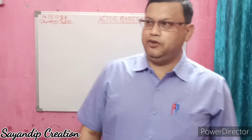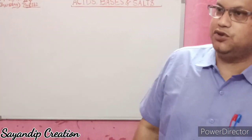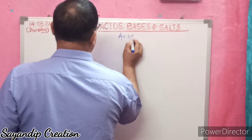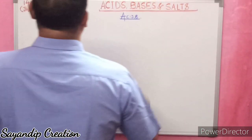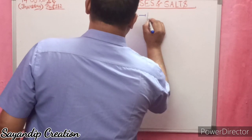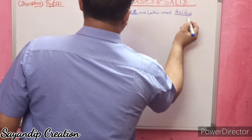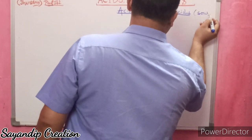I will be giving you notes mixed from different books — please note it down, as it will be more than sufficient. Today I will discuss about acids, and in my next video I will discuss about bases, along with some questions. So first — what are acids? The word 'acid' came from the Latin word 'acidus' (A-C-I-D-U-S), which means sour taste.